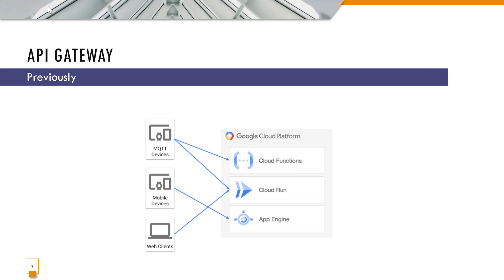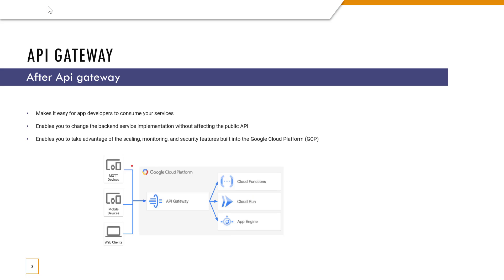Let's say you don't have an API gateway and you're using multiple services like Cloud Function and Cloud Run. The problem with that approach is if you want to have a security mechanism that is the same for all these services, then you would have to implement them independently, and it basically becomes a headache.